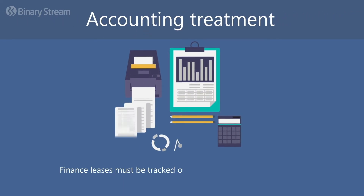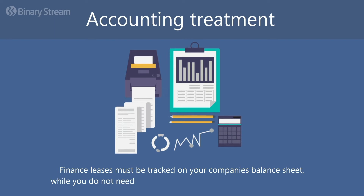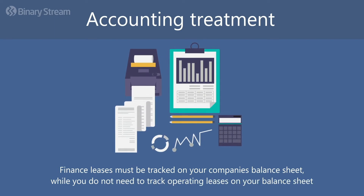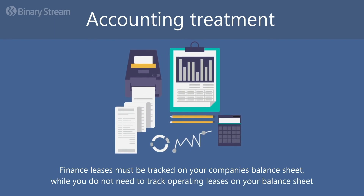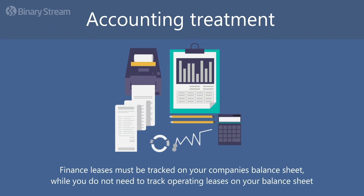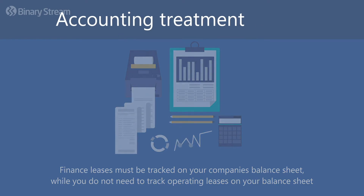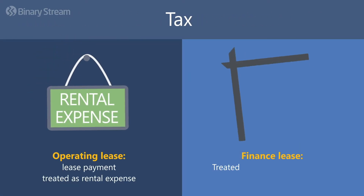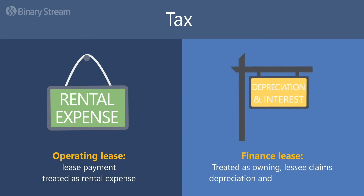Finance leases must be tracked on your company's balance sheet, while you do not need to track operating leases on your balance sheet. For tax purposes, operating lease payments are treated as rental expenses. As finance leases are treated as ownership, the lessee claims depreciation and interest expenses.